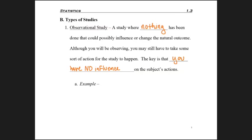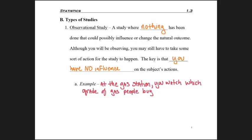For example, at the gas station, you watch which grade of gas people buy. You could have just asked them, but maybe they forgot or maybe they'd lie to you — perhaps their car takes a certain type of gas and they're not buying what they need. So instead, if you just stand back and watch which gas they're buying, you probably didn't do anything to influence their choice. You're just observing.